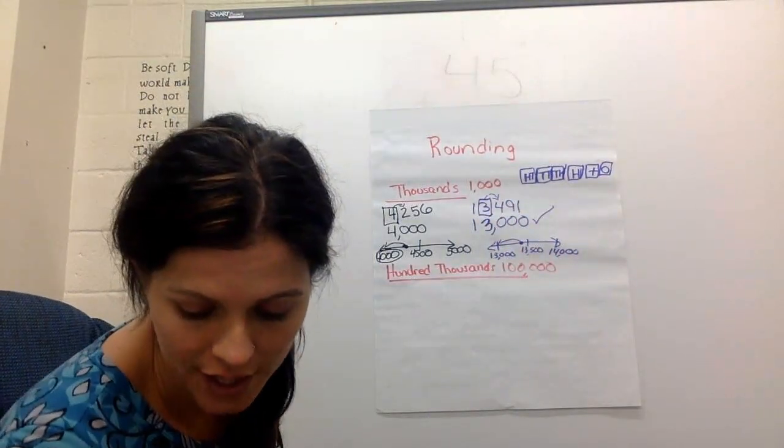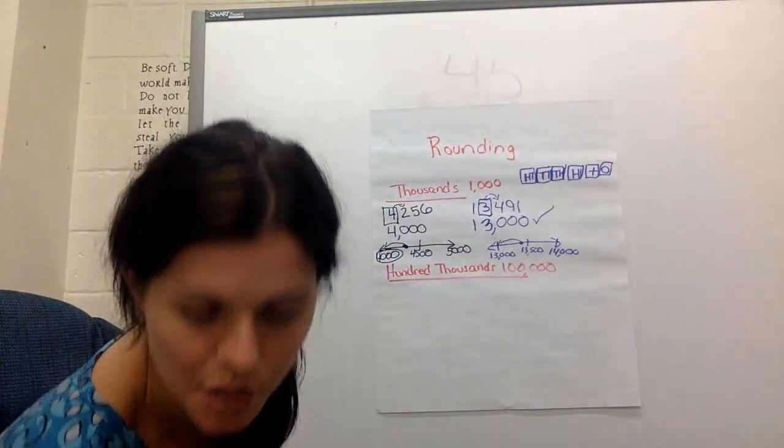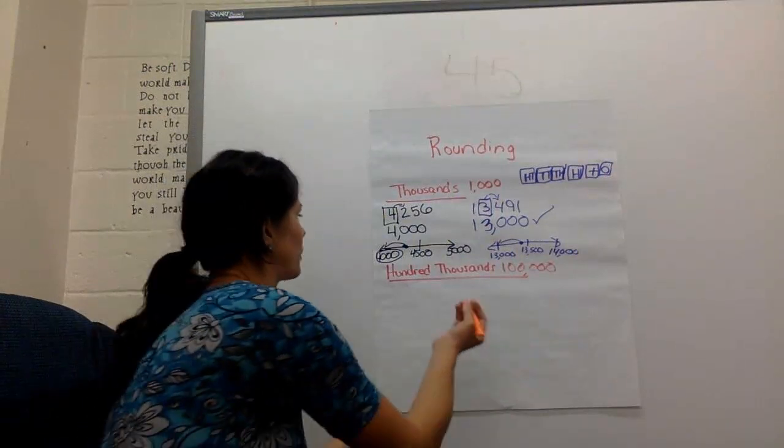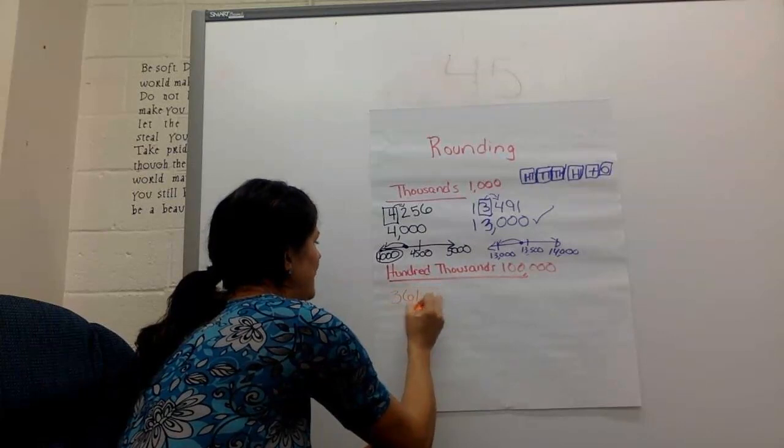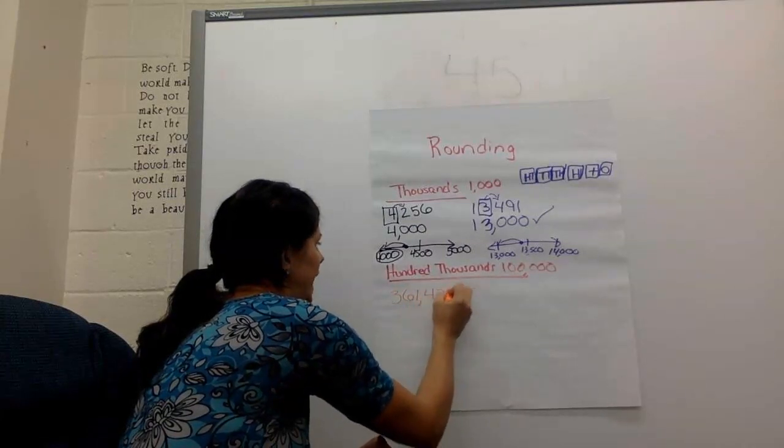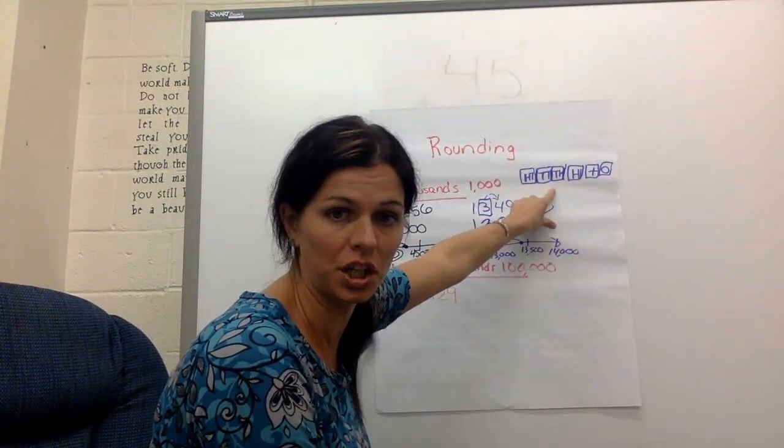Let's challenge ourselves now and do hundred thousands. So hundred thousands is what we're going to round to. So let's say we have the number 361,429.